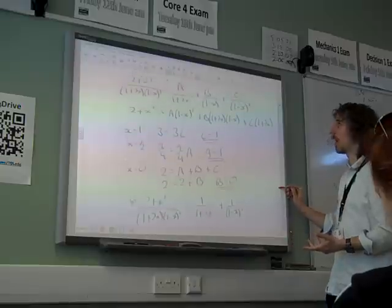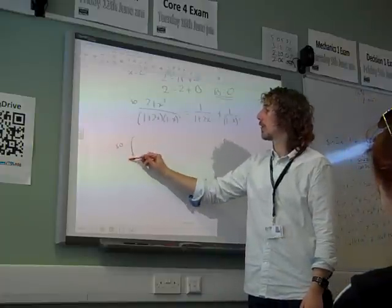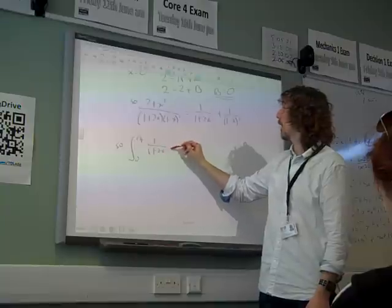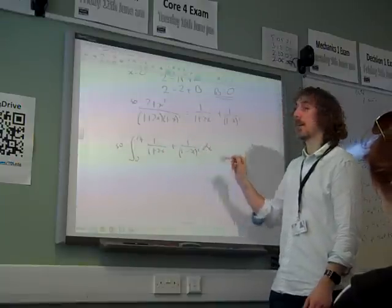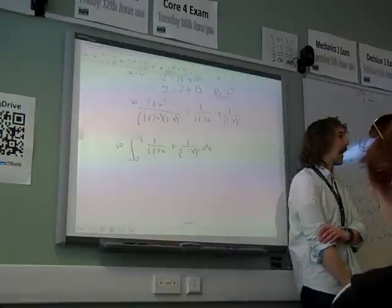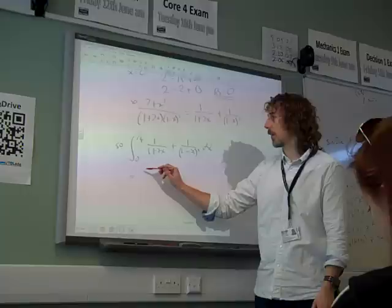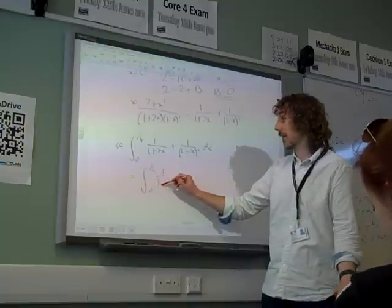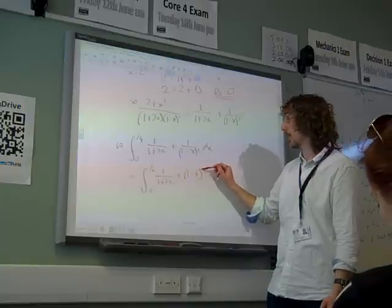Now we're ready to do our integral between 0 and 1 quarter of exactly what we started with. So the integral from 0 to 1 quarter. So we're now doing the integral of 1 over 1 plus 2x plus 1 over 1 minus x squared dx. And I'm not going to go straight into the answer for this because I'm just going to think through what I'm doing. That's going to be a natural log thing, isn't it? And this one is 1 minus x to the minus 2.